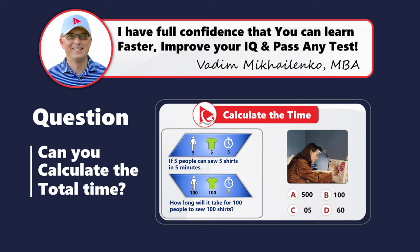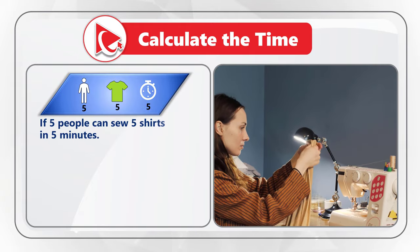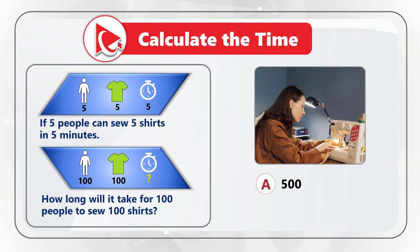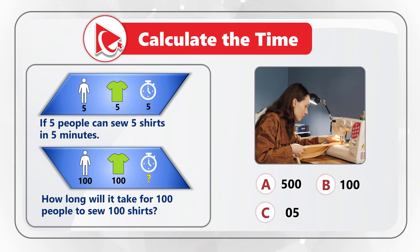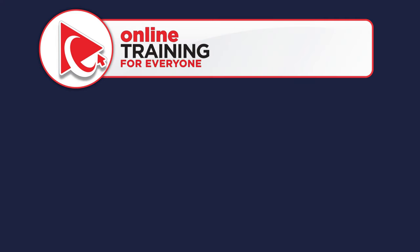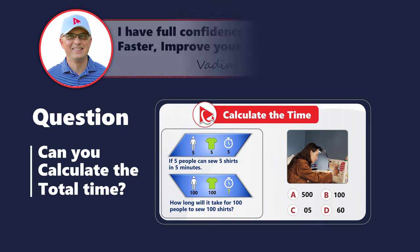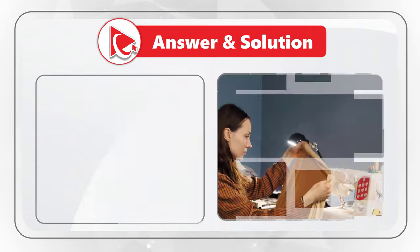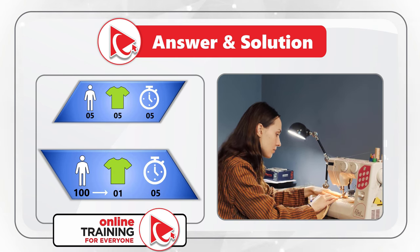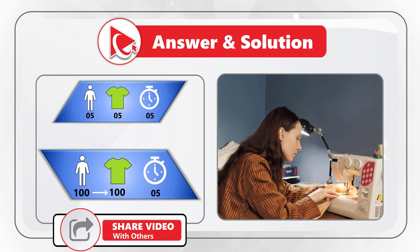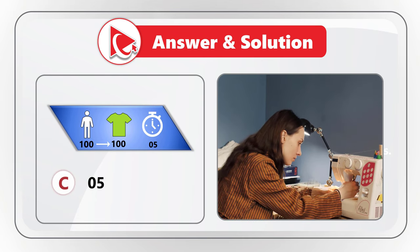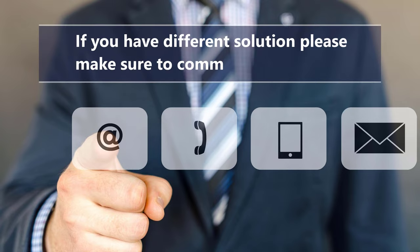Here's a very interesting question. If 5 people can sew 5 shirts in 5 minutes, how long will it take for 100 people to sew 100 shirts? Choices are A: 500 minutes, B: 100 minutes, C: 5 minutes, D: 60 minutes. Here's the trick: if 5 people sew 5 shirts in 5 minutes, then 1 person can sew 1 shirt in 5 minutes. With 100 people working together, they have 100 times the productivity of 1 person, so it will take 100 people just 5 minutes to sew 100 shirts. The correct answer is choice C.